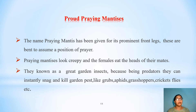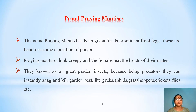Another beneficial insect is the proud praying mantis. The name praying mantis has been given for its prominent front legs, which are meant to assume a position of prayer. Praying mantis look creepy and the females eat the head of their mates. They are known as great garden insects because, being predators, they can instantly catch and kill garden pests like grubs, aphids, grasshoppers, crickets, flies, etc.